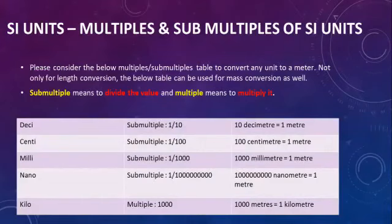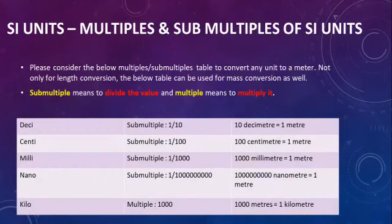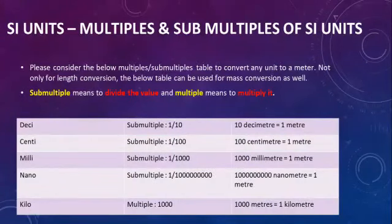Looking at the table, when you want to convert decimeter in terms of meter, you divide by 1/10, since 1 meter equals 10 decimeters. Centimeter to meter: divide by 100, since 1 meter equals 100 centimeters. Millimeter to meter: divide by 1000, since 1 meter equals 1000 millimeters. For nanometer, represented as 10 to the power of minus 9, you divide by 1 followed by 9 zeros to convert to meters.